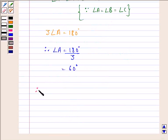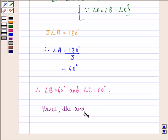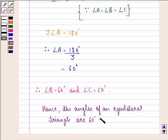Therefore angle B is equal to 60 degrees and angle C also is equal to 60 degrees. Hence, the angles of an equilateral triangle are 60 degrees each. So I hope you understood the question and enjoyed the session, have a good day.